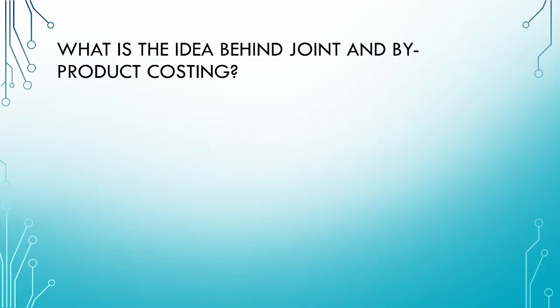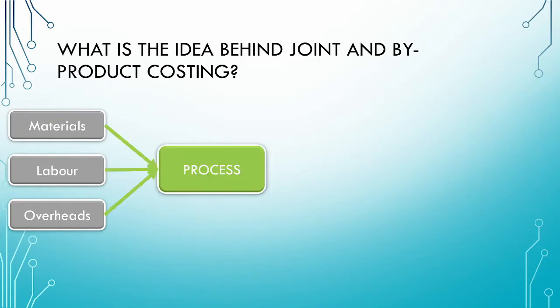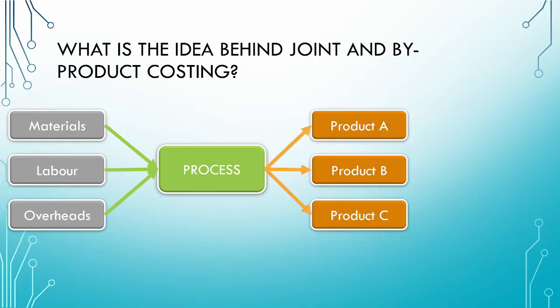So remember, in a joint process, we take our raw materials, labor, and overheads and subject them to a manufacturing process in order to get out multiple products simultaneously. For joint processes, we cannot distinguish between the different products until a specific point known as the split-off point. Before the split-off point, we cannot trace the costs to the individual products.